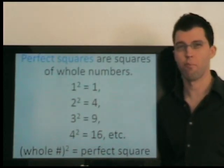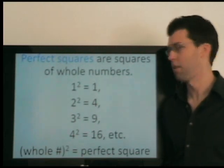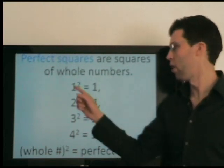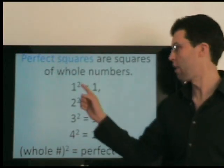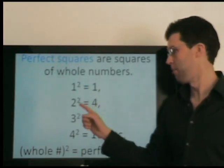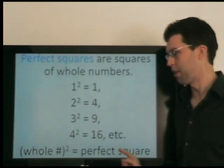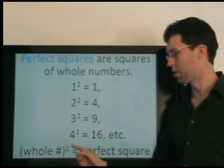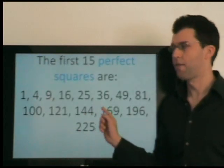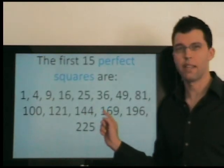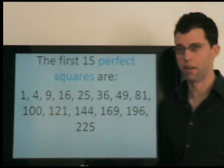Second, we need to review perfect squares. Perfect squares are squares of whole numbers. So 1, 2, 3, 4, etc. are whole numbers. If we square them, we get these numbers — the perfect squares. These are the first 15 perfect squares. It's very useful to know these, and for other topics in math as well.